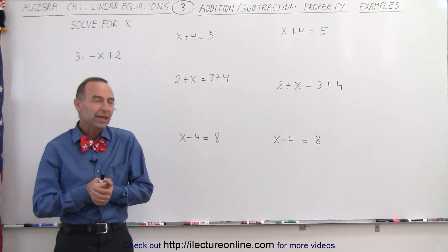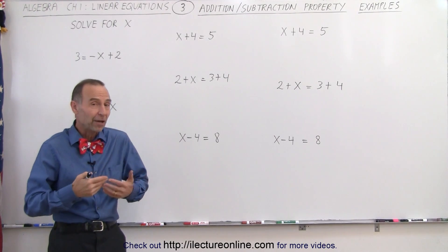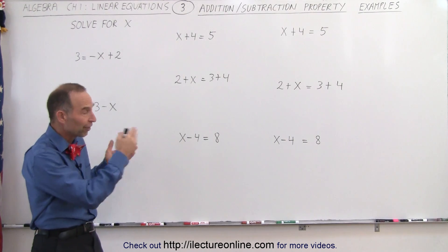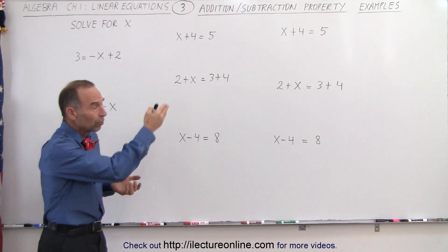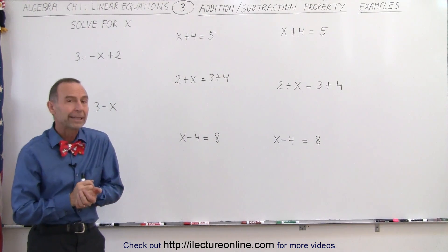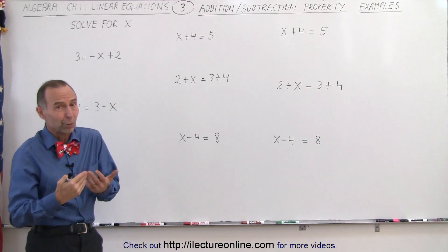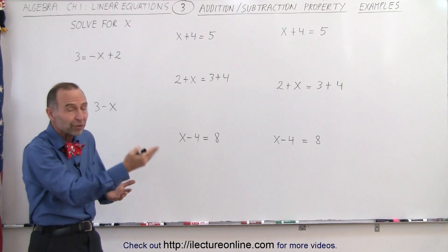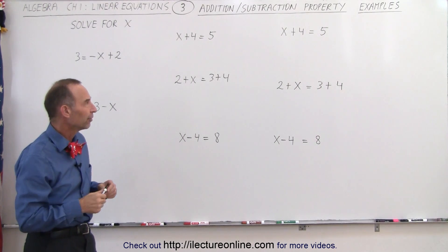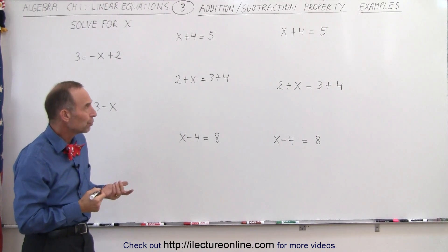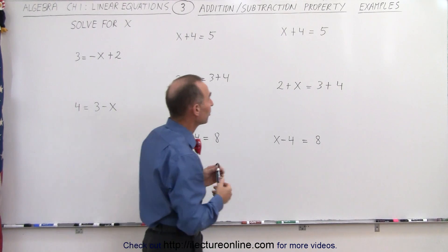Welcome to Electronline. Here we have some simple examples of how to solve for the variable x in these various equations. First, we're going to use the addition-subtraction property, and then we're going to show you how you can do that more easily and more quickly by simply moving things across the equal sign and changing the sign of the term that we move.